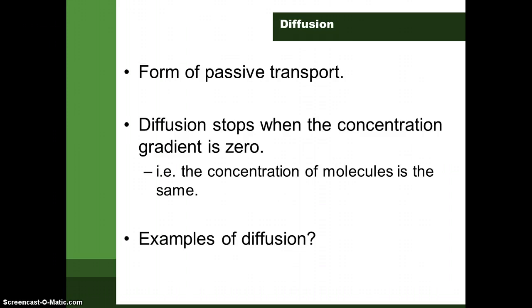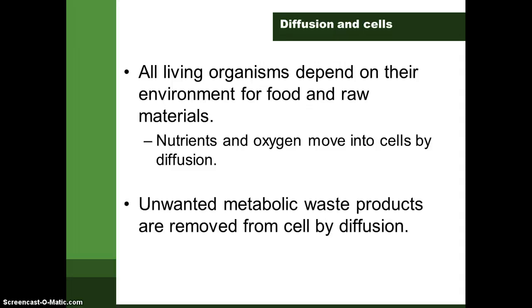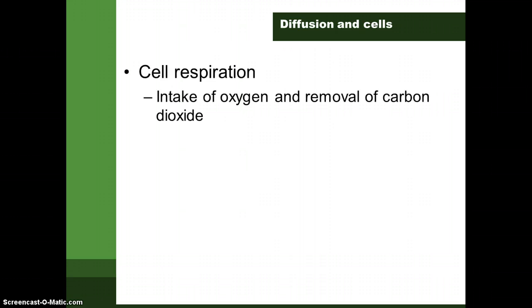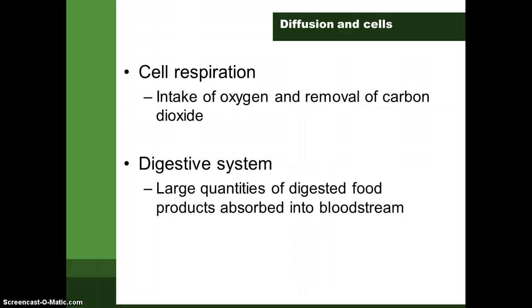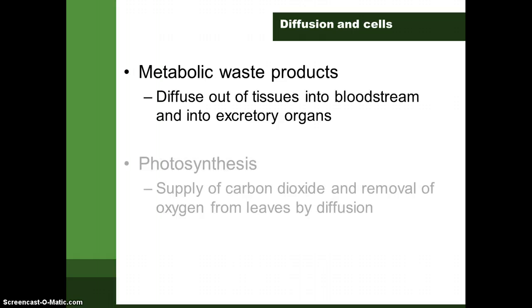Examples of diffusion include: all living organisms depend on the environment for food and raw materials, so nutrients and oxygen move into the cells by diffusion. Unwanted metabolic waste products are removed from the cell by diffusion. Taking in oxygen and removing carbon dioxide from the cell is also by diffusion. Large quantities of digested food products are absorbed into the bloodstream by diffusion, and waste products move out of tissues into the bloodstream and into excretory organs by diffusion. Photosynthesis requires carbon dioxide to enter and oxygen to be removed from leaves, also by diffusion.